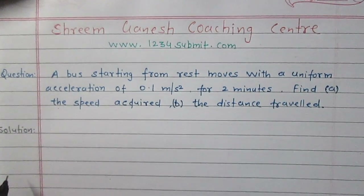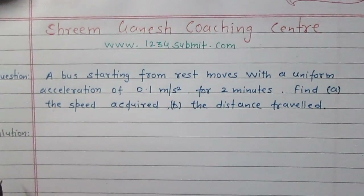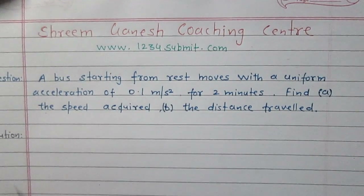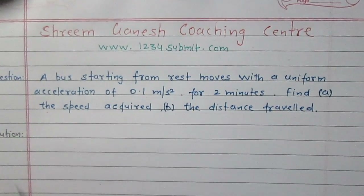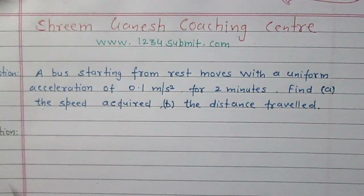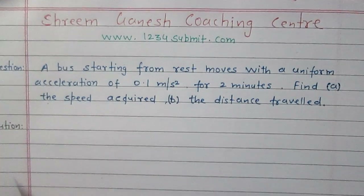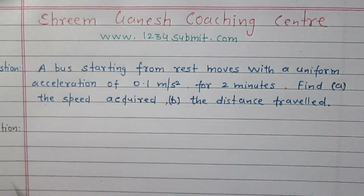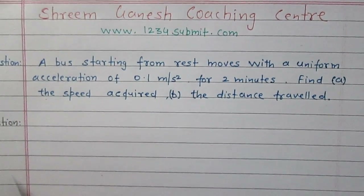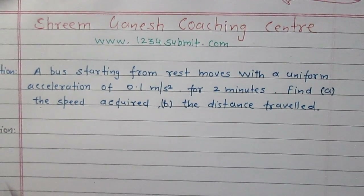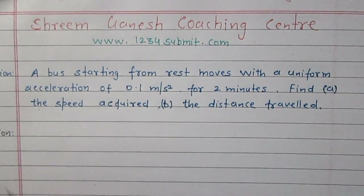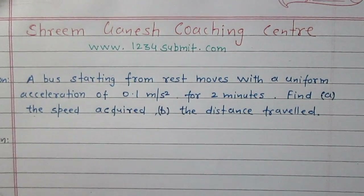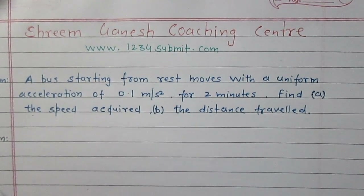A bus starting from rest moves with a uniform acceleration of 0.1 meter per second square for two minutes. Find number one: the speed acquired, and number two: the distance traveled. Read the question carefully.